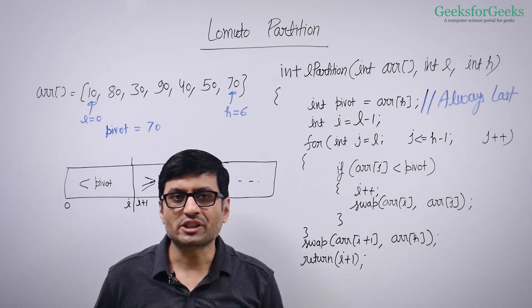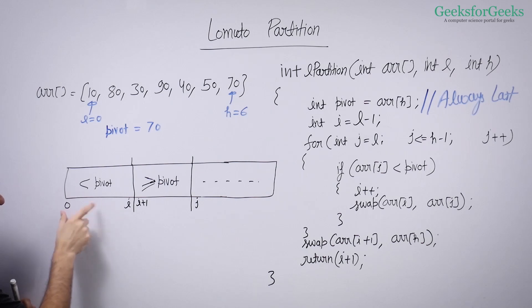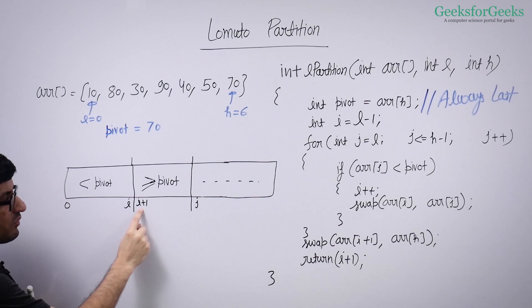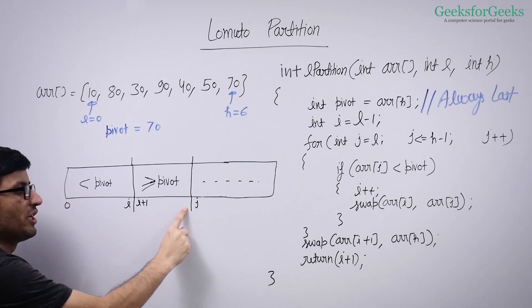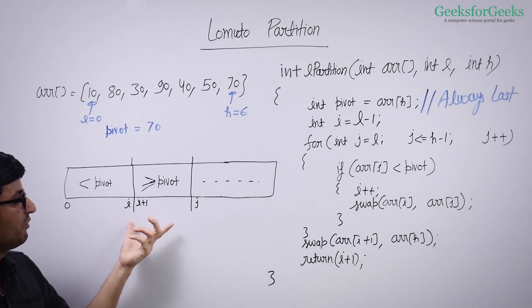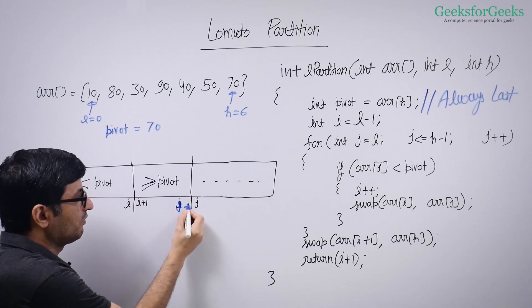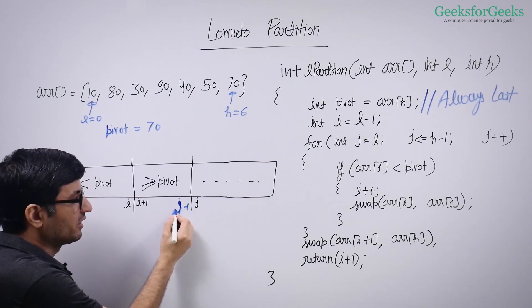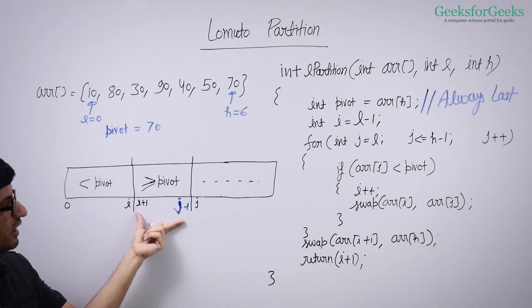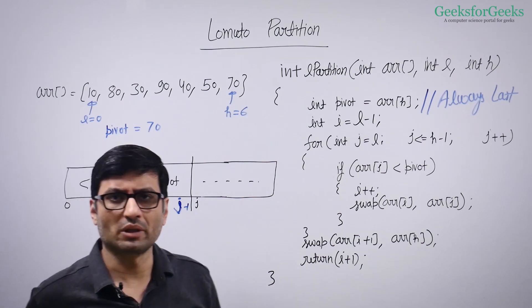While traversing, we ensure that elements from index zero to i are smaller than the pivot, and elements from i plus one to j minus one are greater than or equal to the pivot. So when we are at index j, we are sure about these things — we maintain this loop invariant.